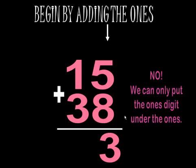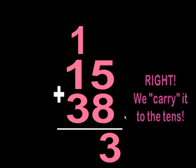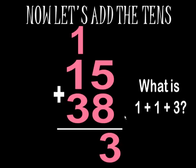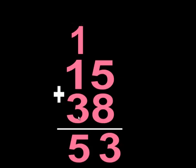I take and carry that one group of 10 into the tens column. Now I'm going to add the tens. What is the one 10 that I regrouped, plus one 10, plus three 10s? What is 1 plus 1 plus 3? Using your math strategies, find the sum — and you got it, 5 is the sum. So 15 plus 38 gives me the sum of 53.